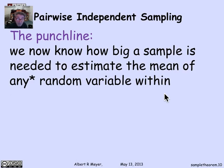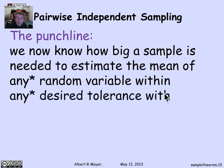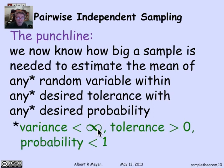That's why it's called independent sampling, because we now know how big a sample is needed to estimate the mean of any random variable with any desired tolerance and any desired probability, where, of course, the variance has to be finite, the tolerance has to be positive, tolerance is delta, and the probability has to be less than 1.